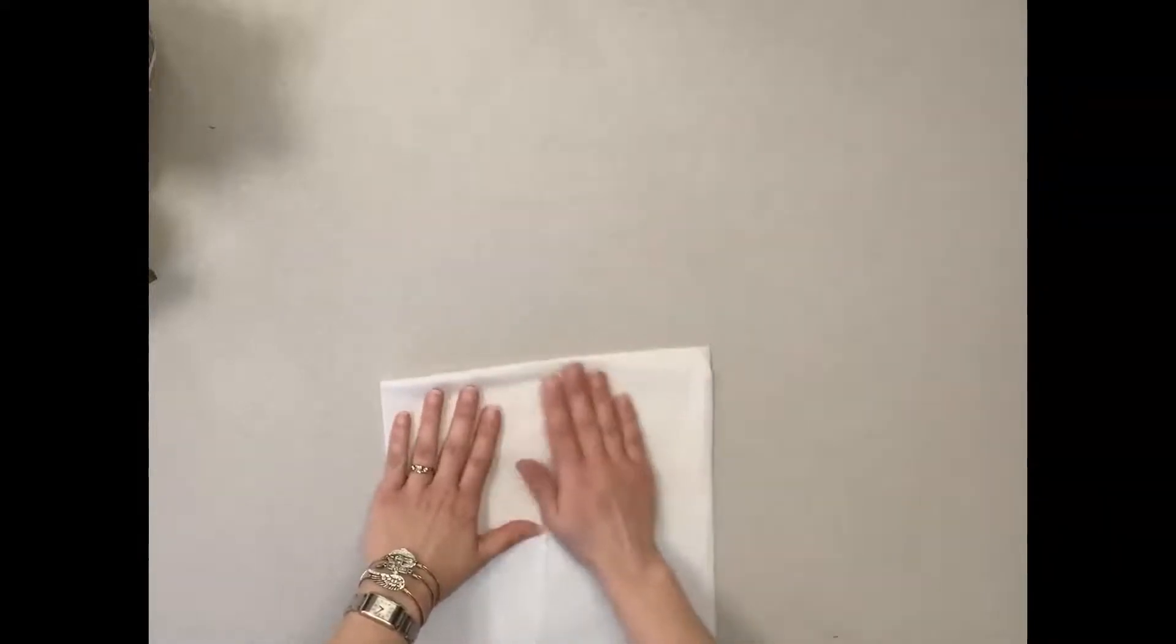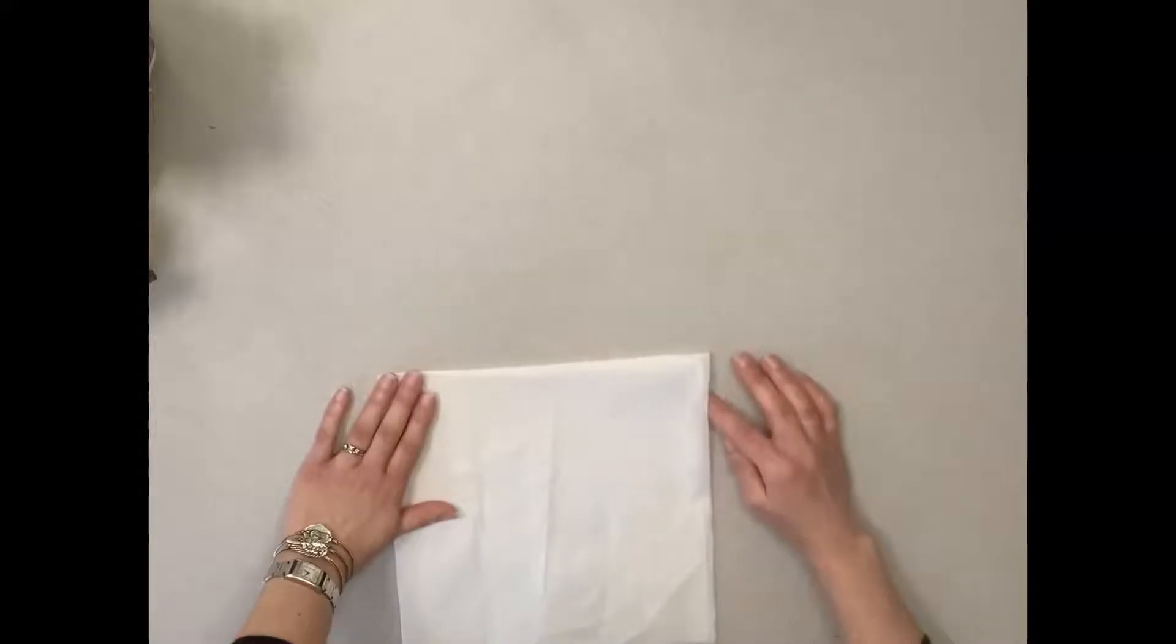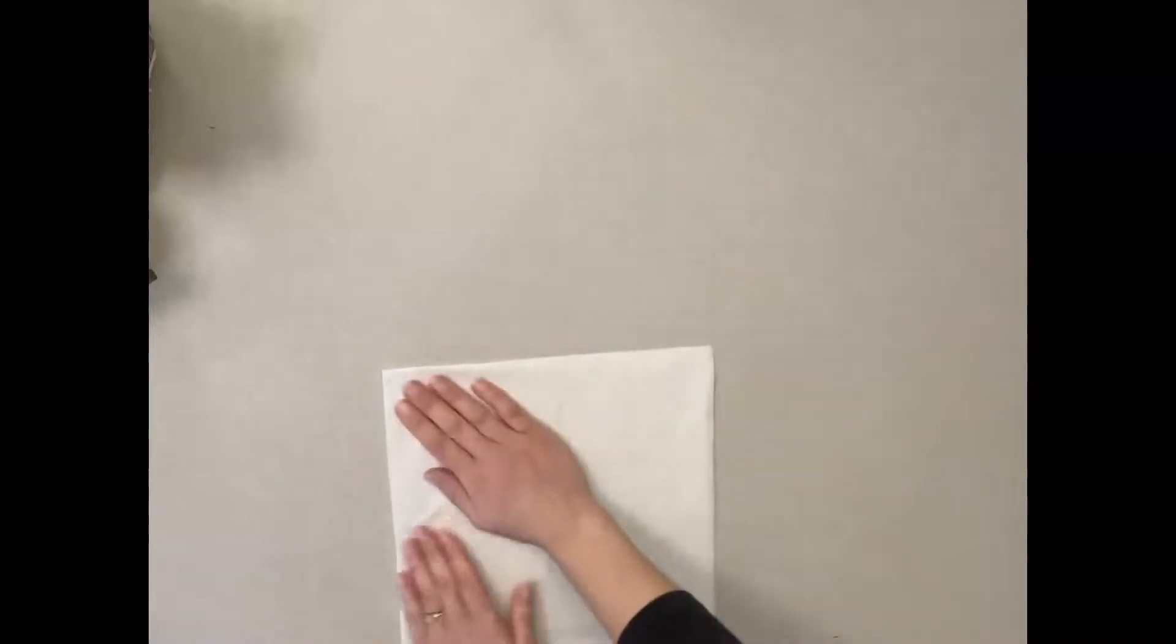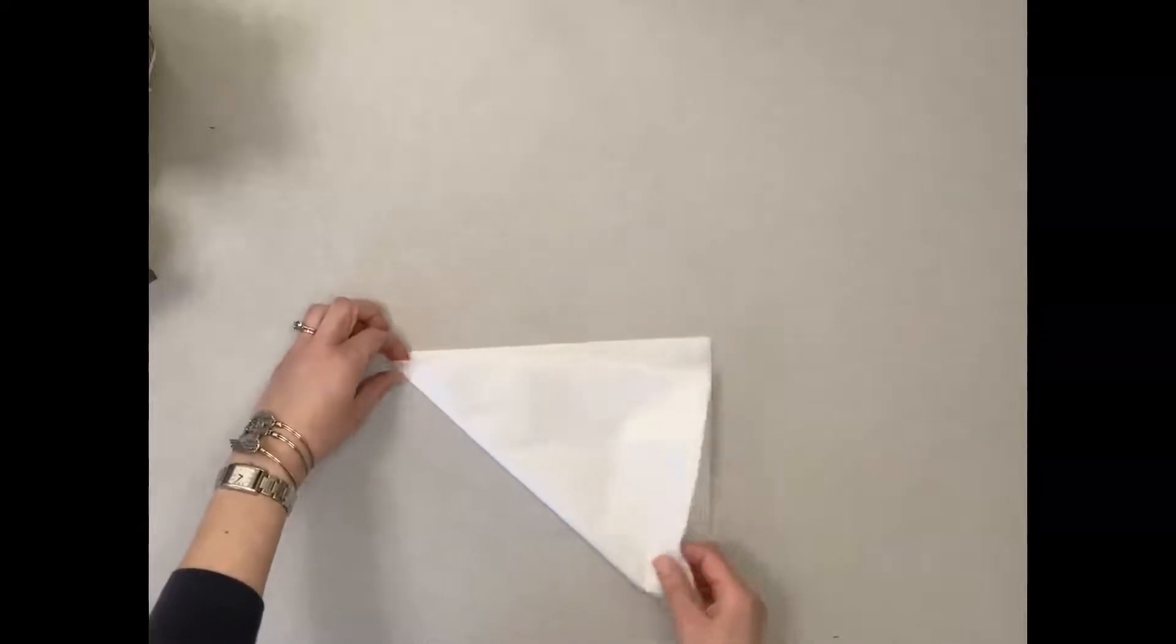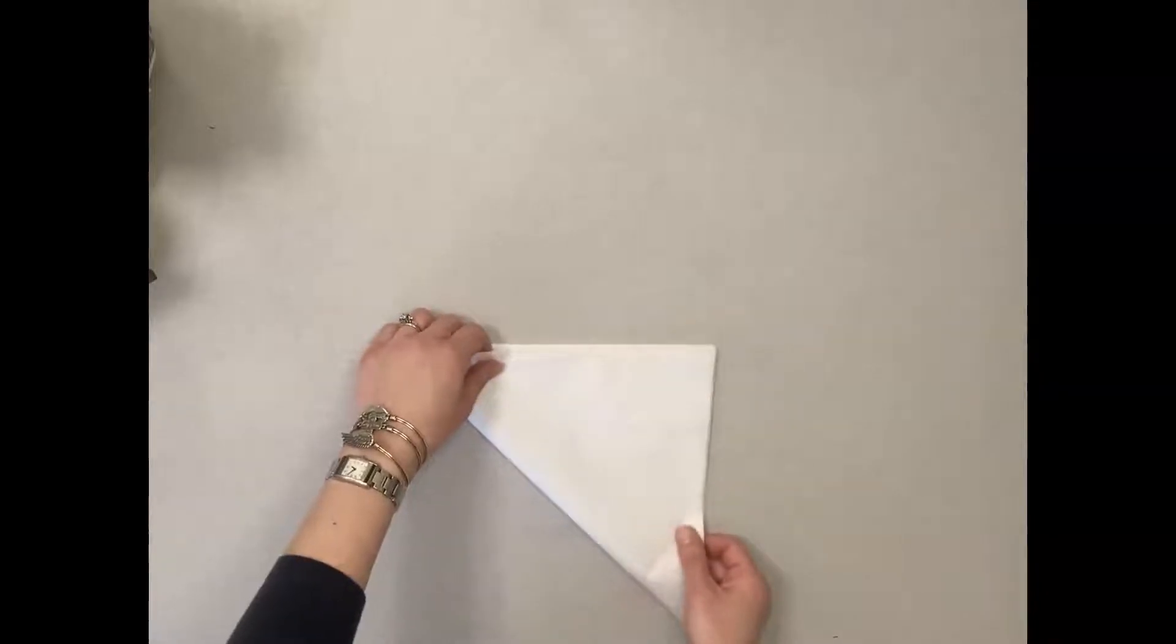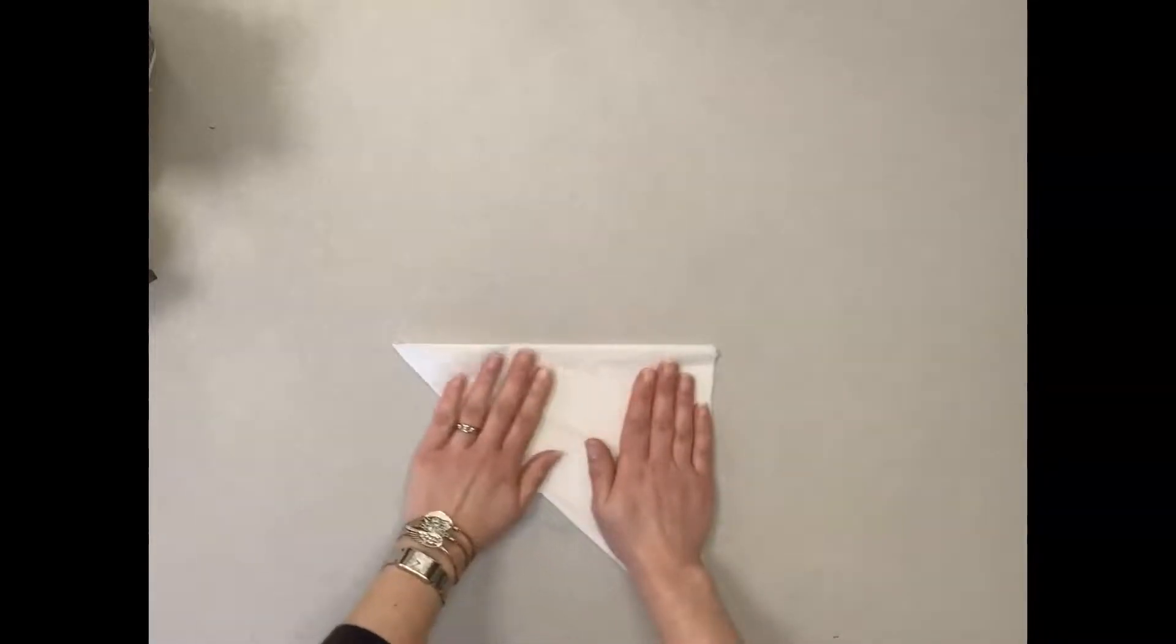Okay, then we are going to fold it in half again, top to bottom like so. And then we are going to fold this in half again, so we're taking this bottom left hand side up to the right hand side. Fold it in half so you have a triangle.